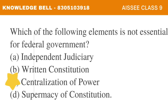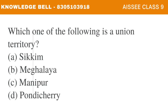The next question is: Which one of the following is a union territory? A. Sikkim, B. Meghalaya, C. Manipur, D. Pondicherry. The correct answer is Option D: Pondicherry. This is a very easy but important question. Pondicherry, out of the four options, is a union territory.